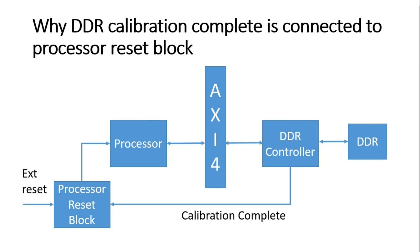Most commonly, if DDR is present in our system, we place our application codes, driver codes, or Linux kernel inside DDR memory. In that case, our processor reset vector is set to DDR memory. When our processor powers up and comes out of reset, its program counter will start pointing to DDR memory. Now assume I have not connected the calibration complete signal to the processor reset block — as soon as I power up, the processor will be out of reset and its program counter will start reading DDR memory, but DDR calibration is not yet complete, so the DDR controller cannot respond.